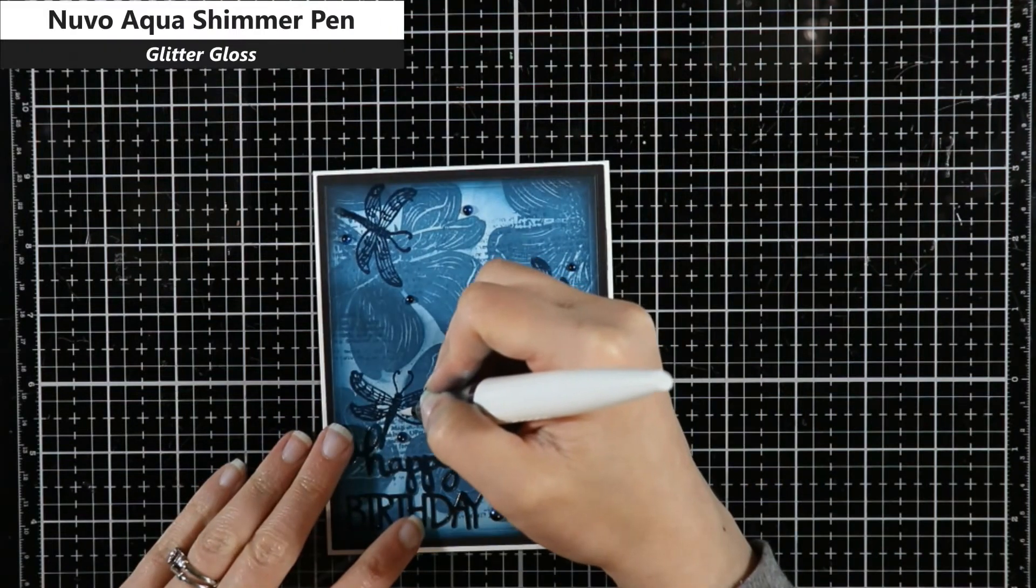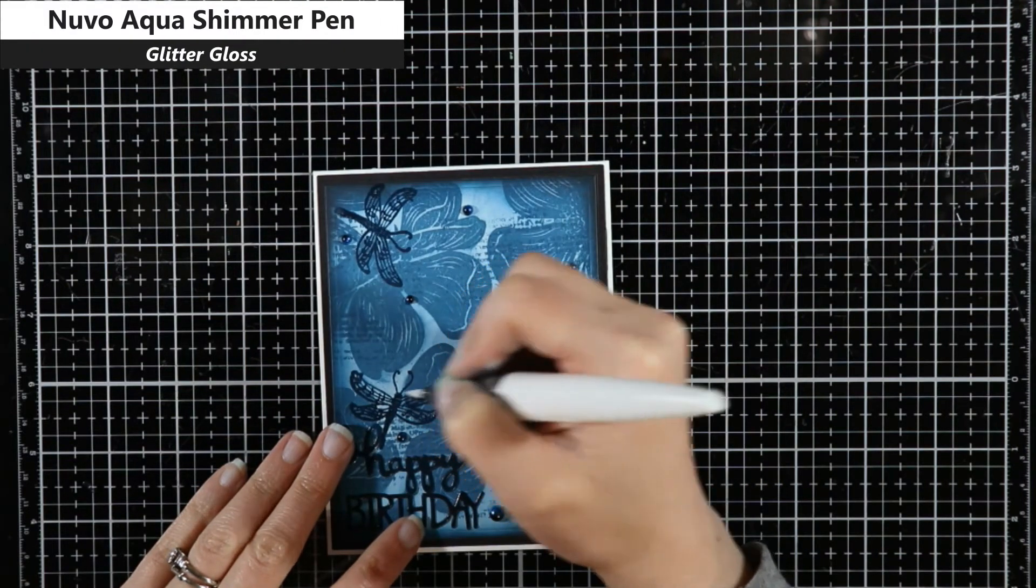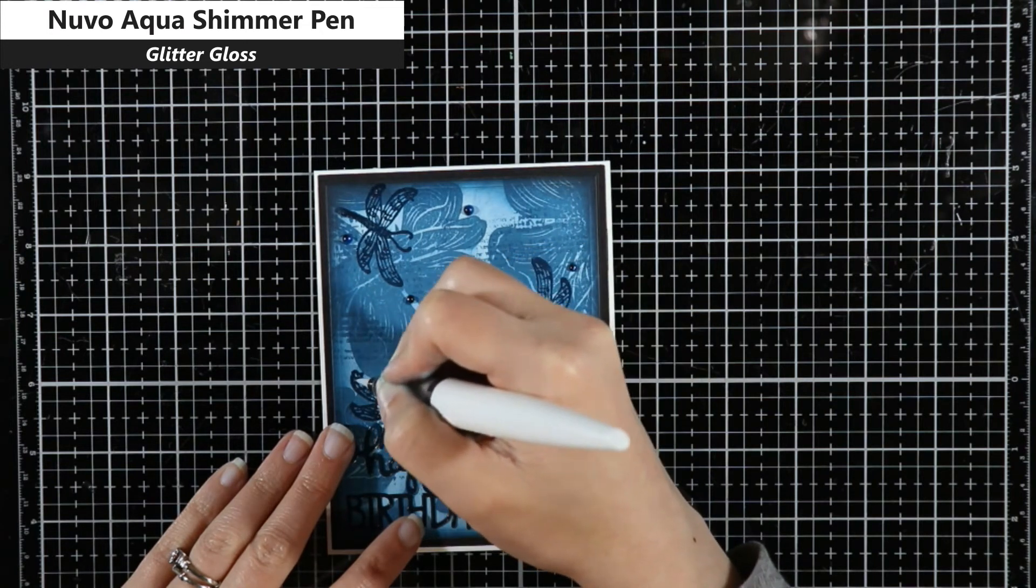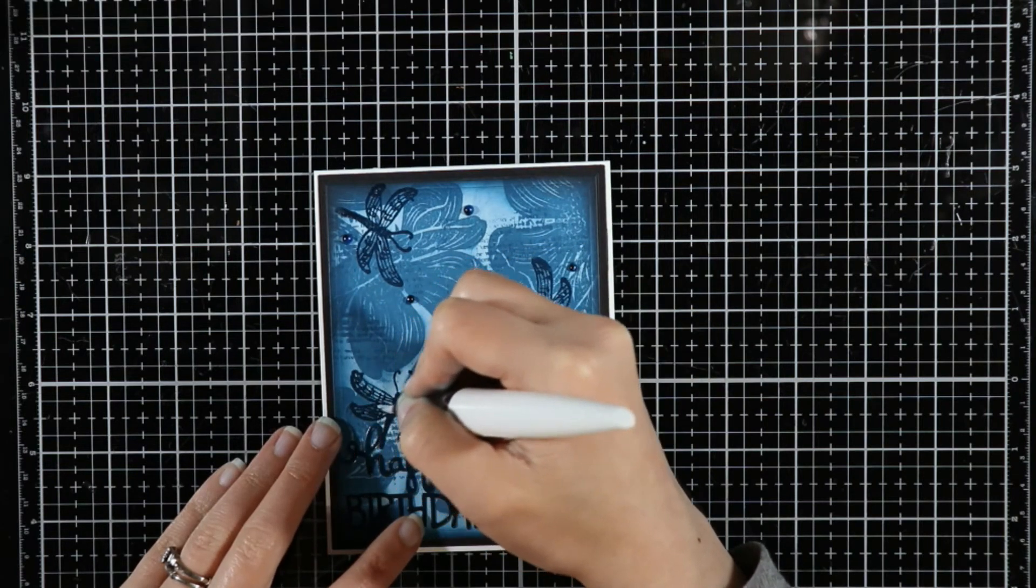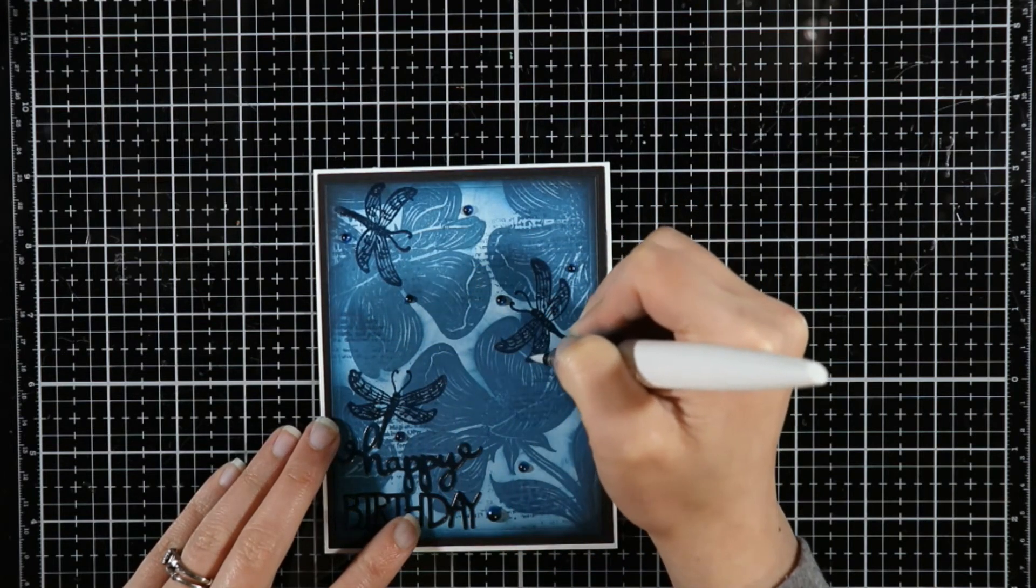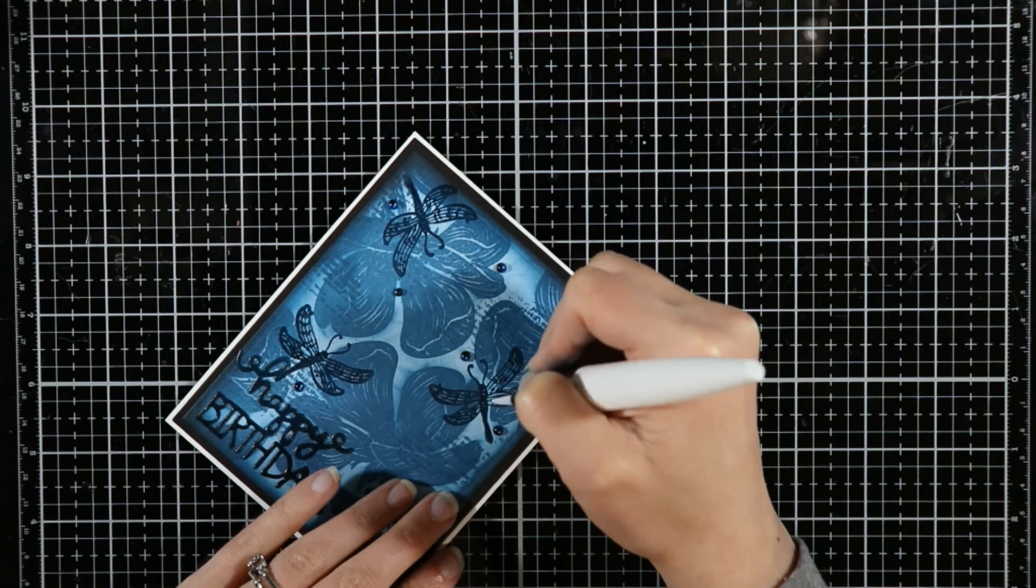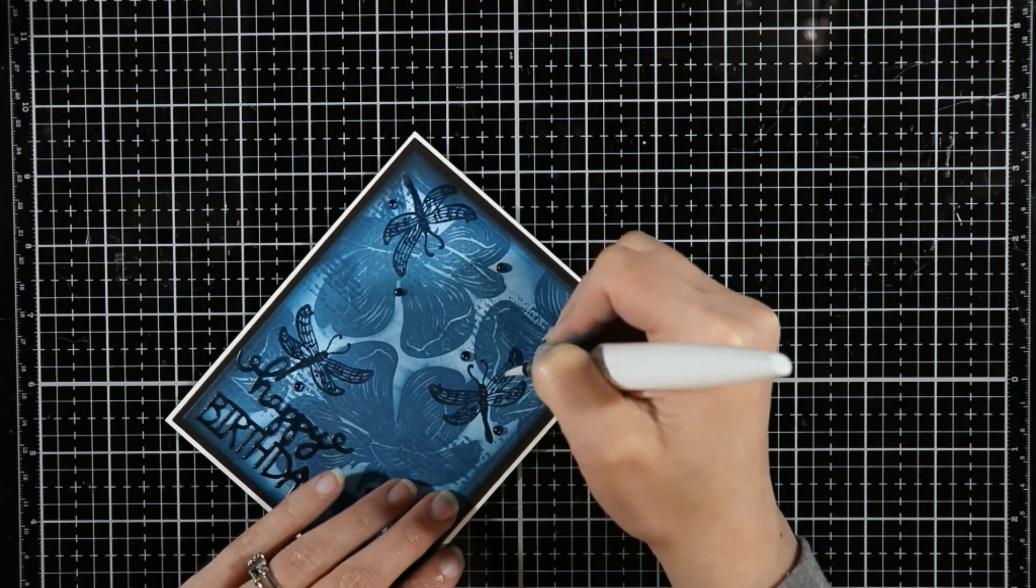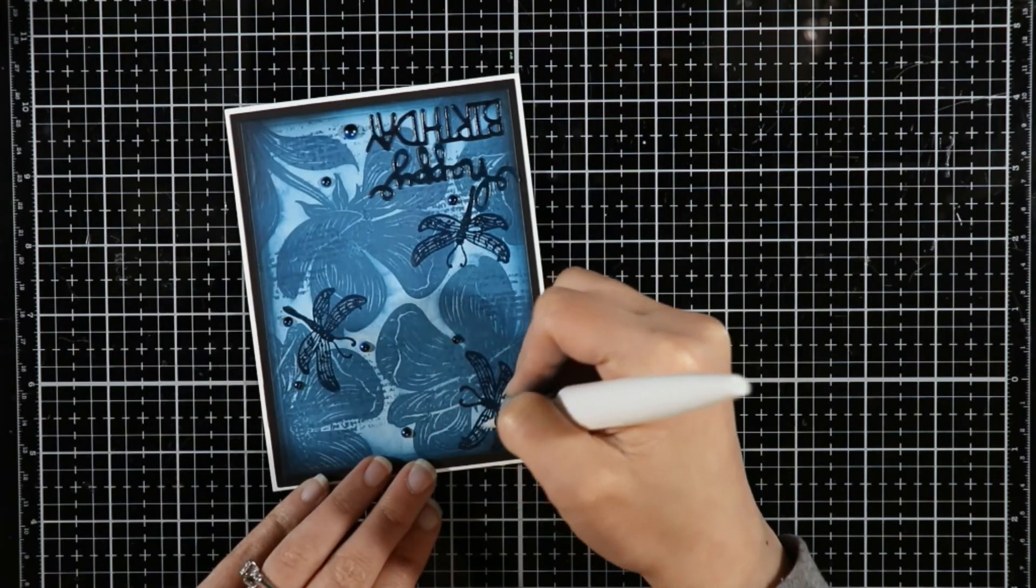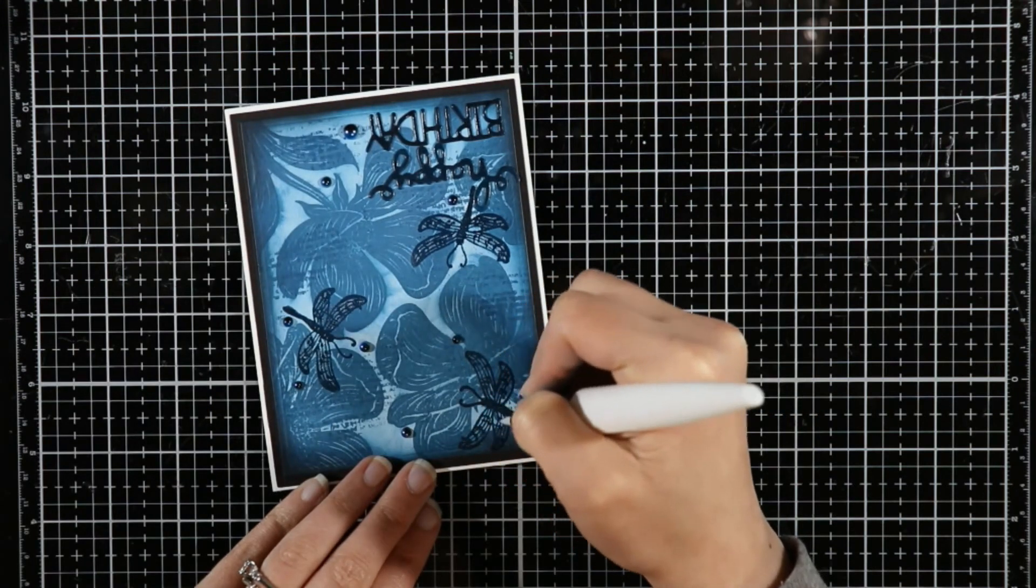I'm going to add a finishing touch of a Nouveau Aqua Shimmer pen. It has been a long day, guys. My mom's having surgery tomorrow, so we had some pre-op appointments and stuff like that. The doctor was running two hours late anyway. So I'm just adding some Nouveau Aqua Shimmer pen here in the Glitter Gloss color.